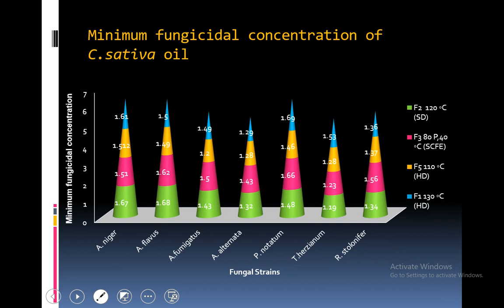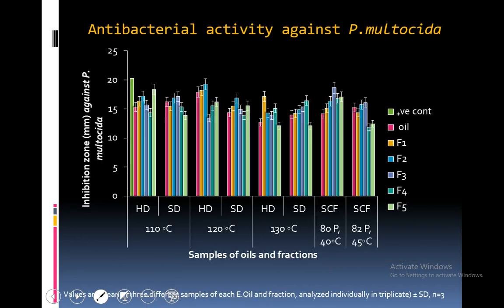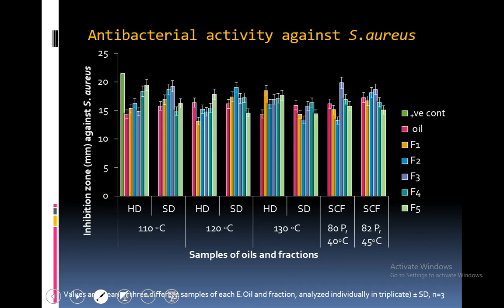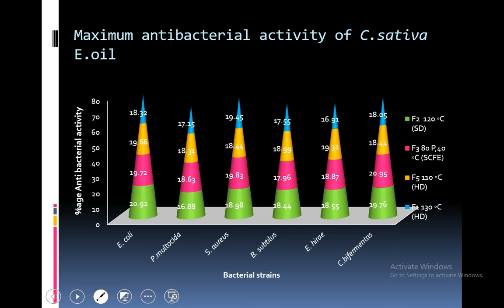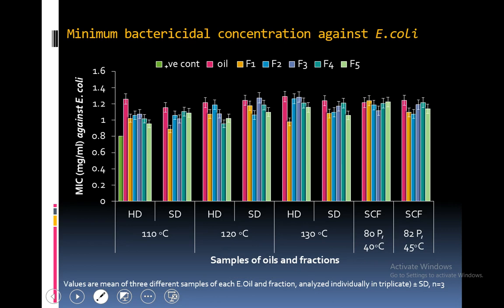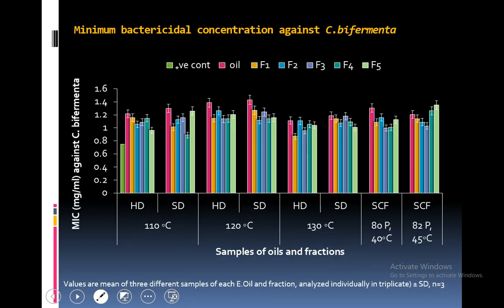The minimum fungicidal concentration of Cannabis sativa essential oil is shown in the graph against A. niger, A. flavus, A. fumigatus, A. alternata, P. notatum, T. harzianum and Candida albicans. Antibacterial activity by disc diffusion method was also performed. Antibacterial fractions of steam-distilled, hydro-distilled and supercritical fluid extracted essential oil were used. Antibacterial activity was assessed against S. aureus, B. subtilis, E. coli, and C. bifermentans. The minimum bactericidal concentration against E. coli, B. maltocida, S. aureus, B. subtilis, EID and S. bifermentans is presented.